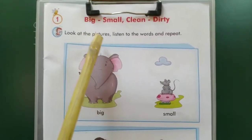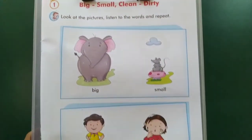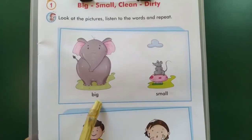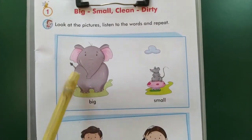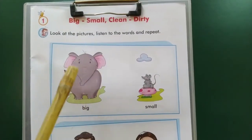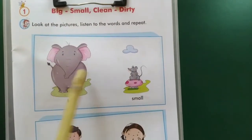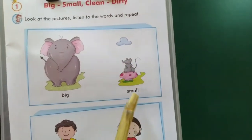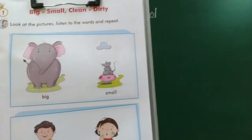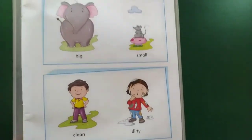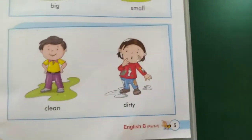Look at the pictures, listen to the words and repeat. B-I-G, big — big means motha. What is this? Elephant — the elephant is big. This is a mouse — is the mouse big? No, the elephant is big. S-M-A-double-L, small — small means lahan. So big means motha, small means lahan.